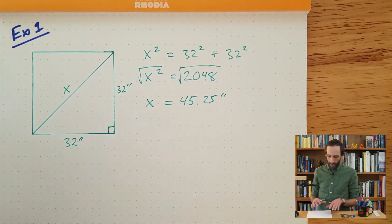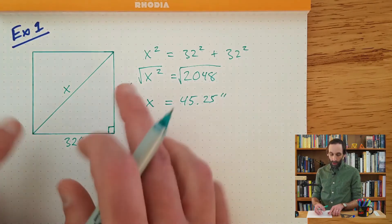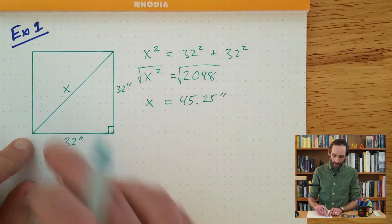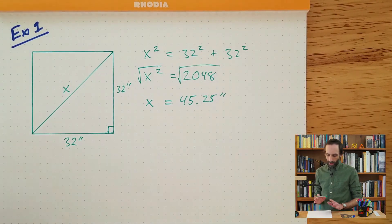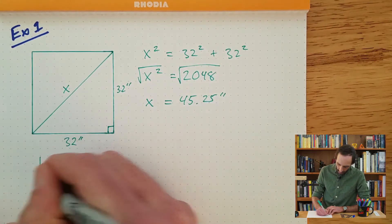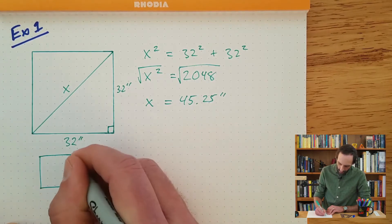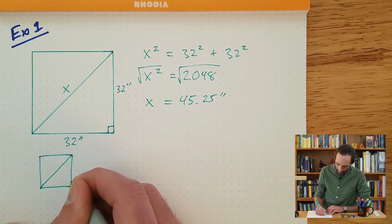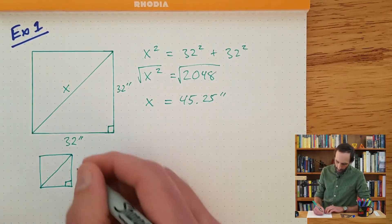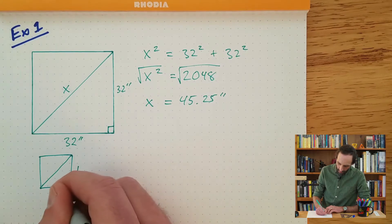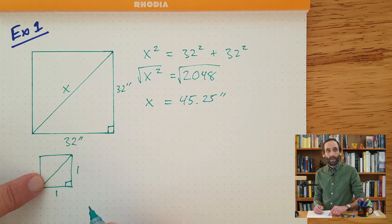Now, before we go on to the next example, I want to talk for just a moment about when you have a situation where you have a square and you want to find the diagonal — there is an approach that's even a little bit faster. So I'm going to draw a square quickly and then draw a diagonal through the square, just like this particular example above. But now I'm going to say that these lengths are both 1, and let's figure out what this diagonal is.